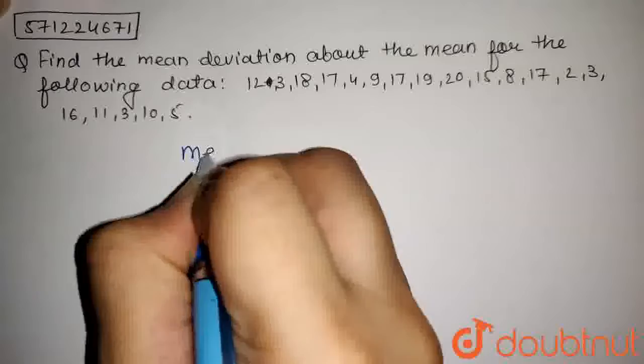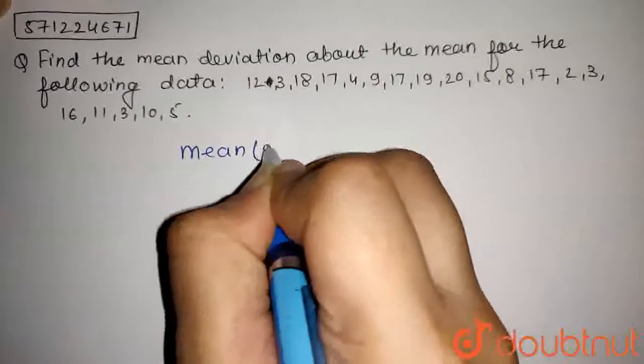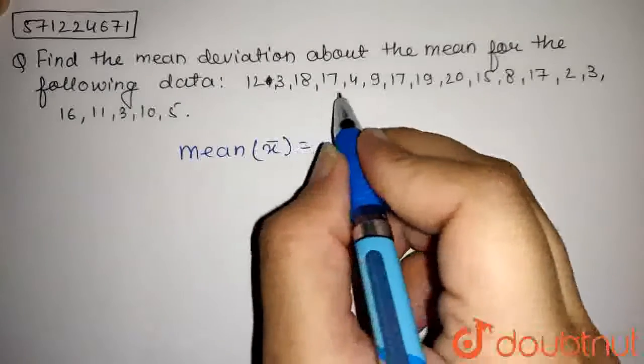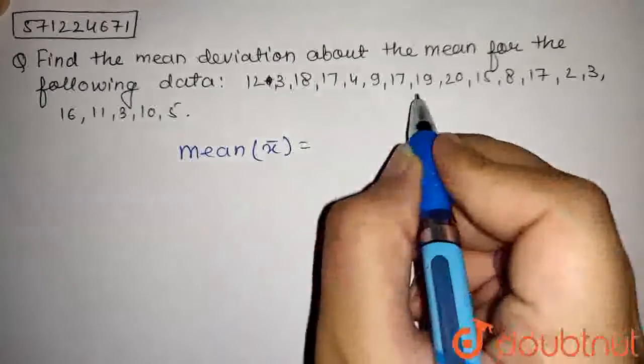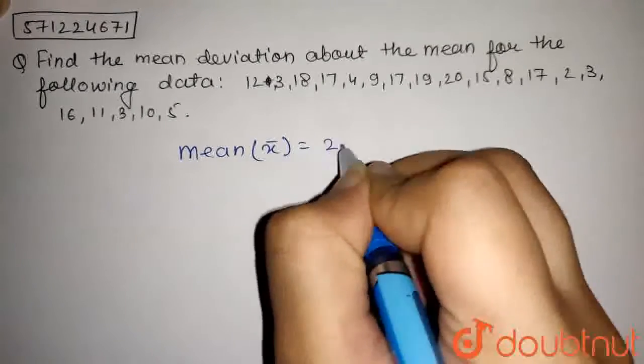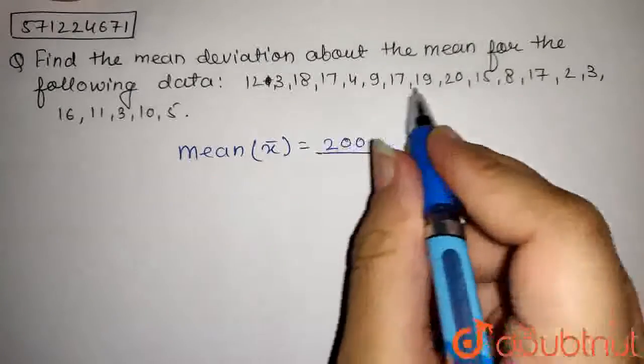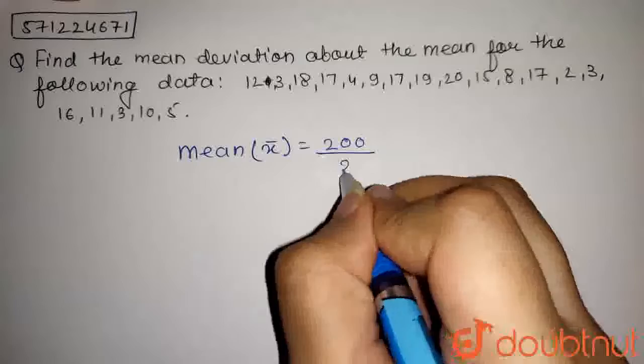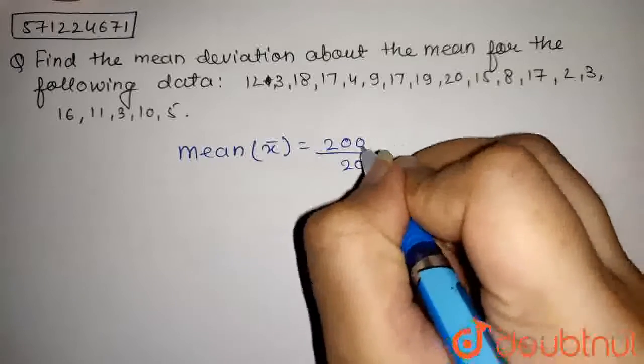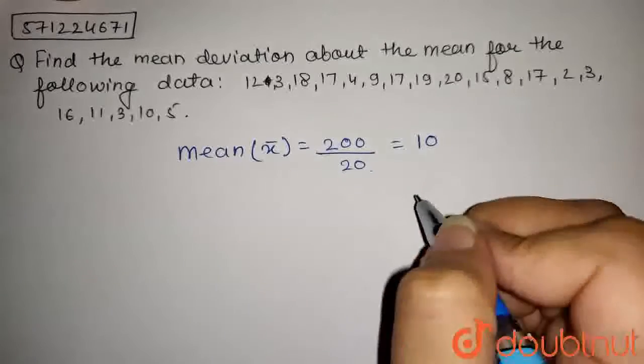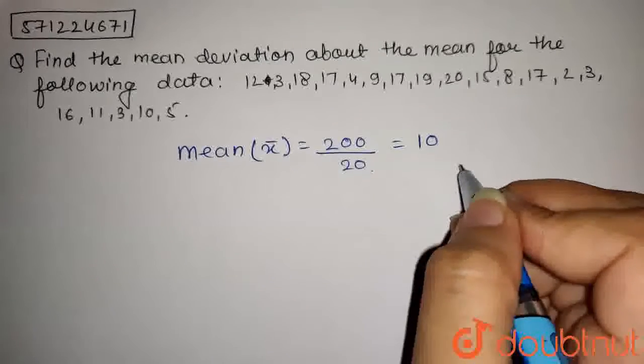So, the mean of this data will be represented by x bar, which is equal to sum of these observations. The sum of this observation is 200 upon number of observations, and the number of observations are 20. So, mean will be 200 upon 20, which is equal to 10. The mean of these observations is 10.